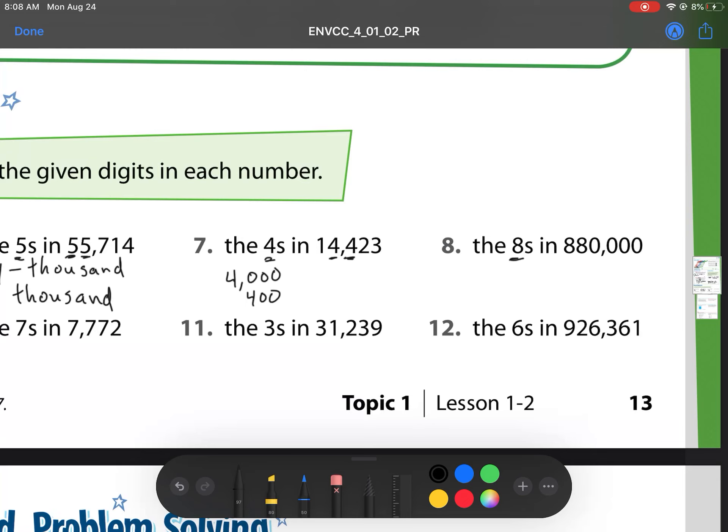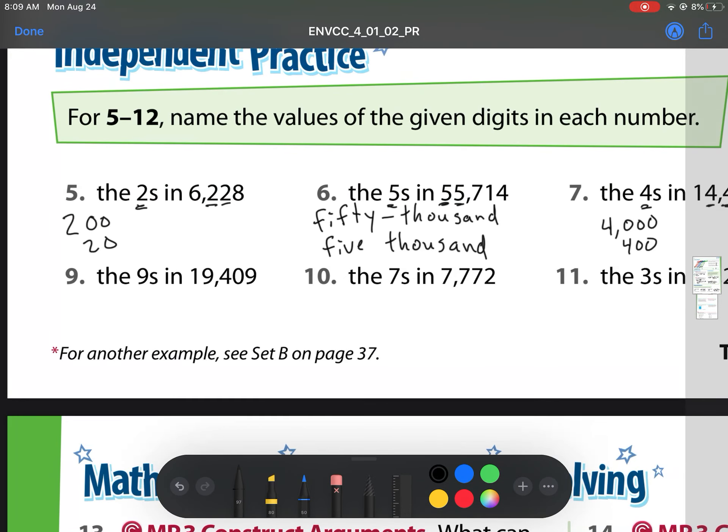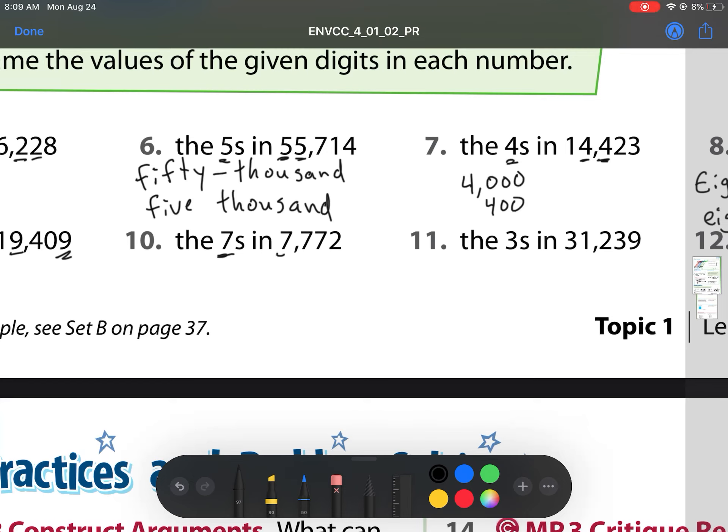My next one is 8. So we have 800,000 and 80,000. And that's this second one right there. On to number nine. The nines. So we have 9,000 and we have just nine. That one was easy. Our next one. Notice there's three sevens here. So I need to write all of them. So we have 7,000, 700, and 70.